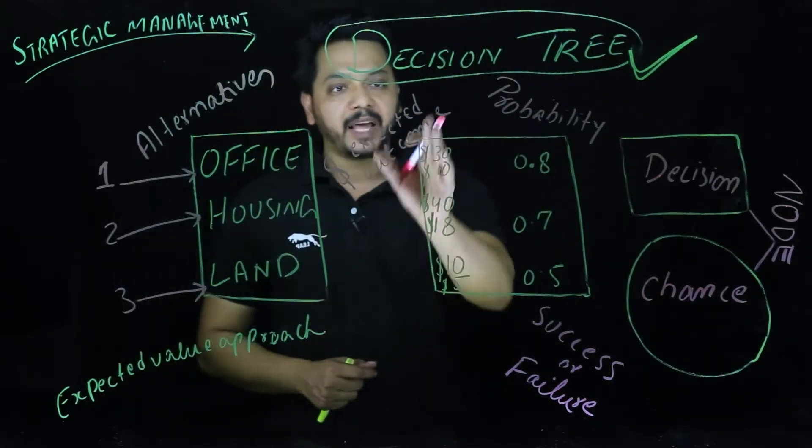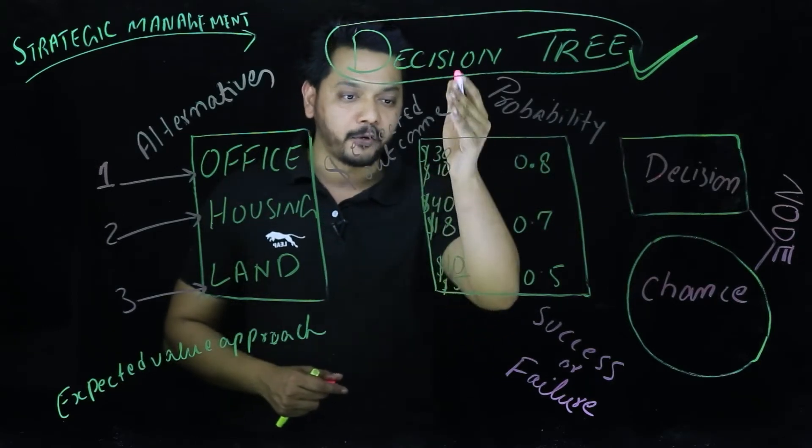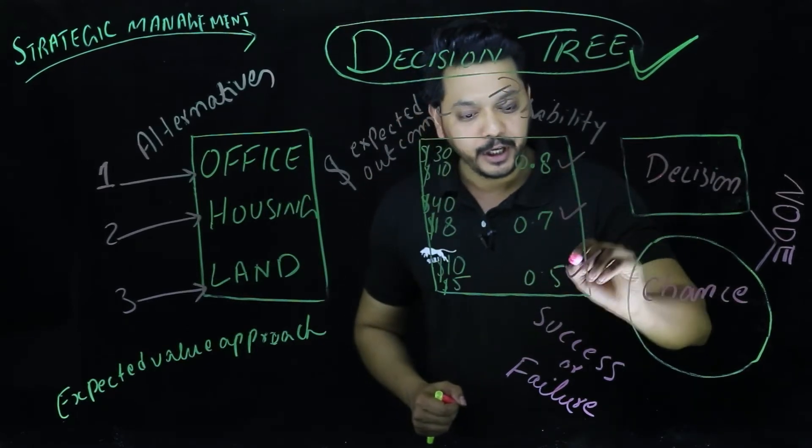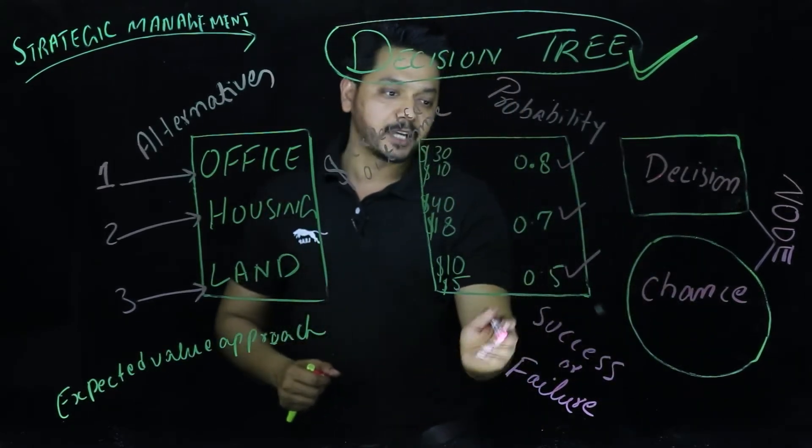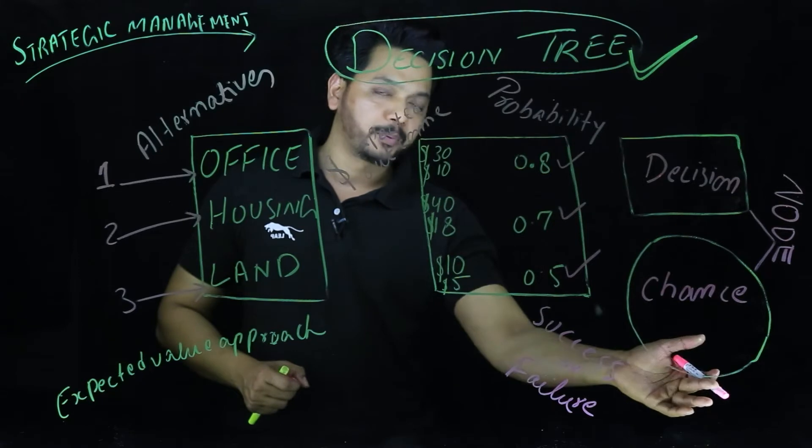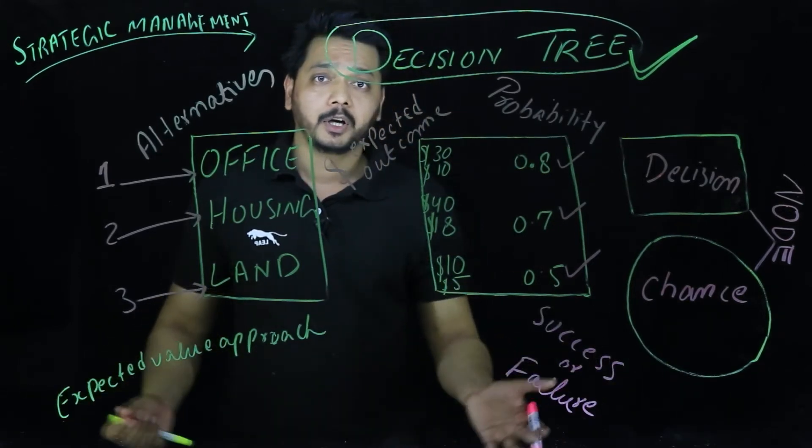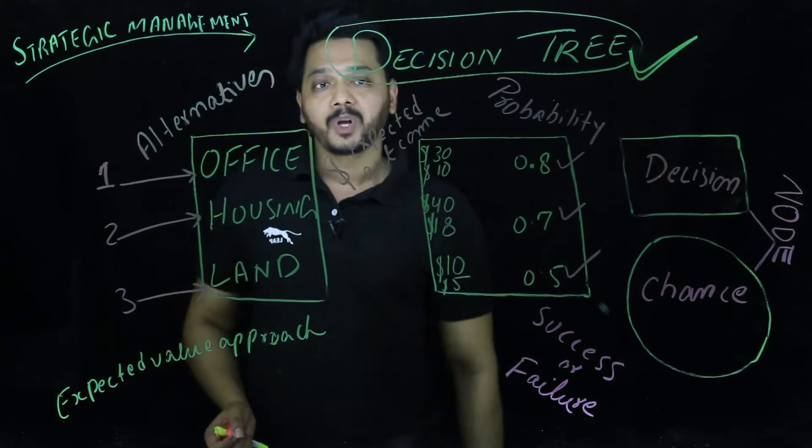On the other hand, we would be having the expected values with us in the form of currency, the dollars. We have got the probabilities. Along with that, it has a probability of 80% probability of success, maybe 20% probability of failure and likewise.